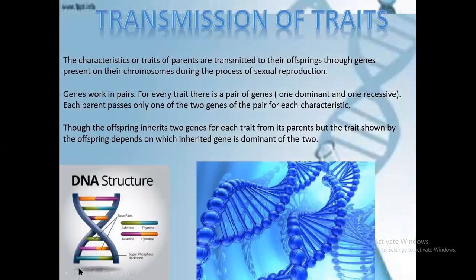Transmission of traits. The characteristics or traits of a parent are transmitted to their offspring through genes present on their chromosomes during the process of sexual reproduction. Gene works in pairs — for every trait there is a pair of genes, one dominant and another recessive. Each parent possesses only one of the two genes of the pair for each characteristic. Though the offspring inherits two genes for each trait from its parents, the trait shown depends on which inherited gene is dominant.